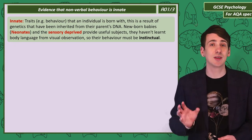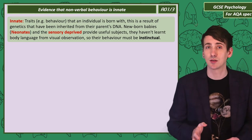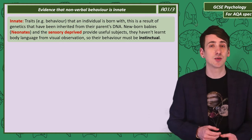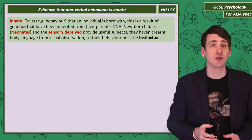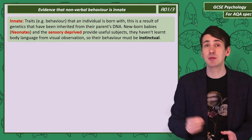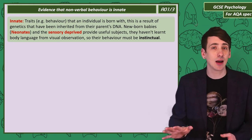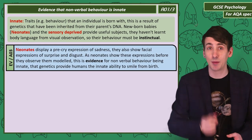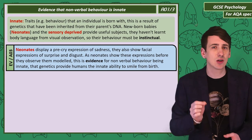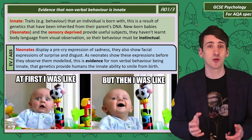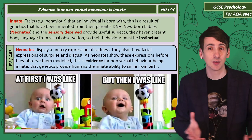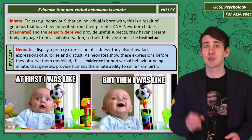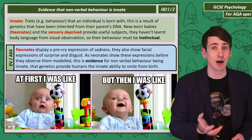There are strong arguments and evidence for body language being a result of genetic inheritance. Researchers point to the body language of newborn babies and sensory-deprived children — participants who haven't been able to visually observe and imitate others, so any body language they display must be instinctual. Looking at neonates, we can see a pre-cry expression of sadness, as well as smiling, surprise and disgust. As babies show these expressions before seeing them modelled, this suggests the expressions are innate — we have the genes to smile from birth.